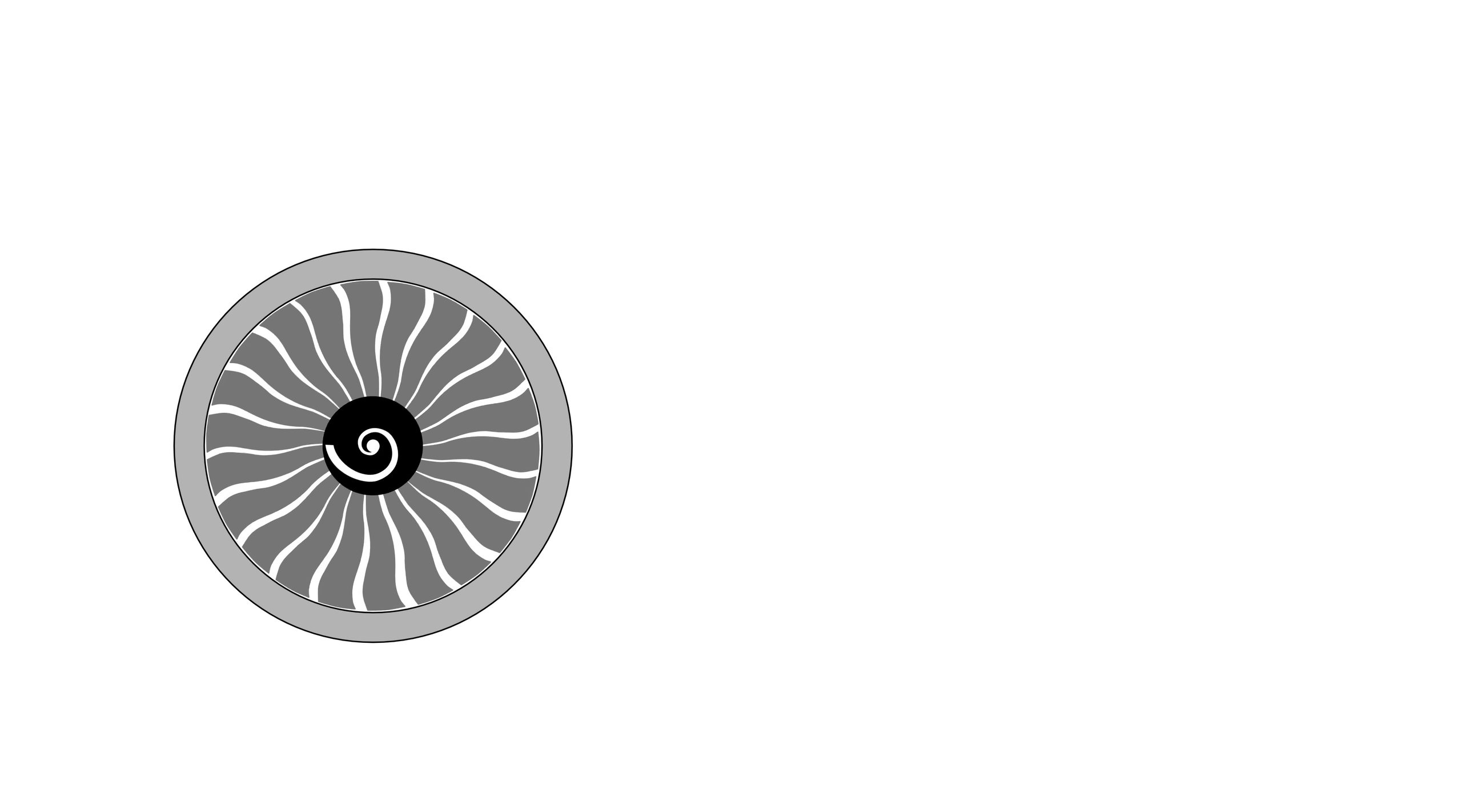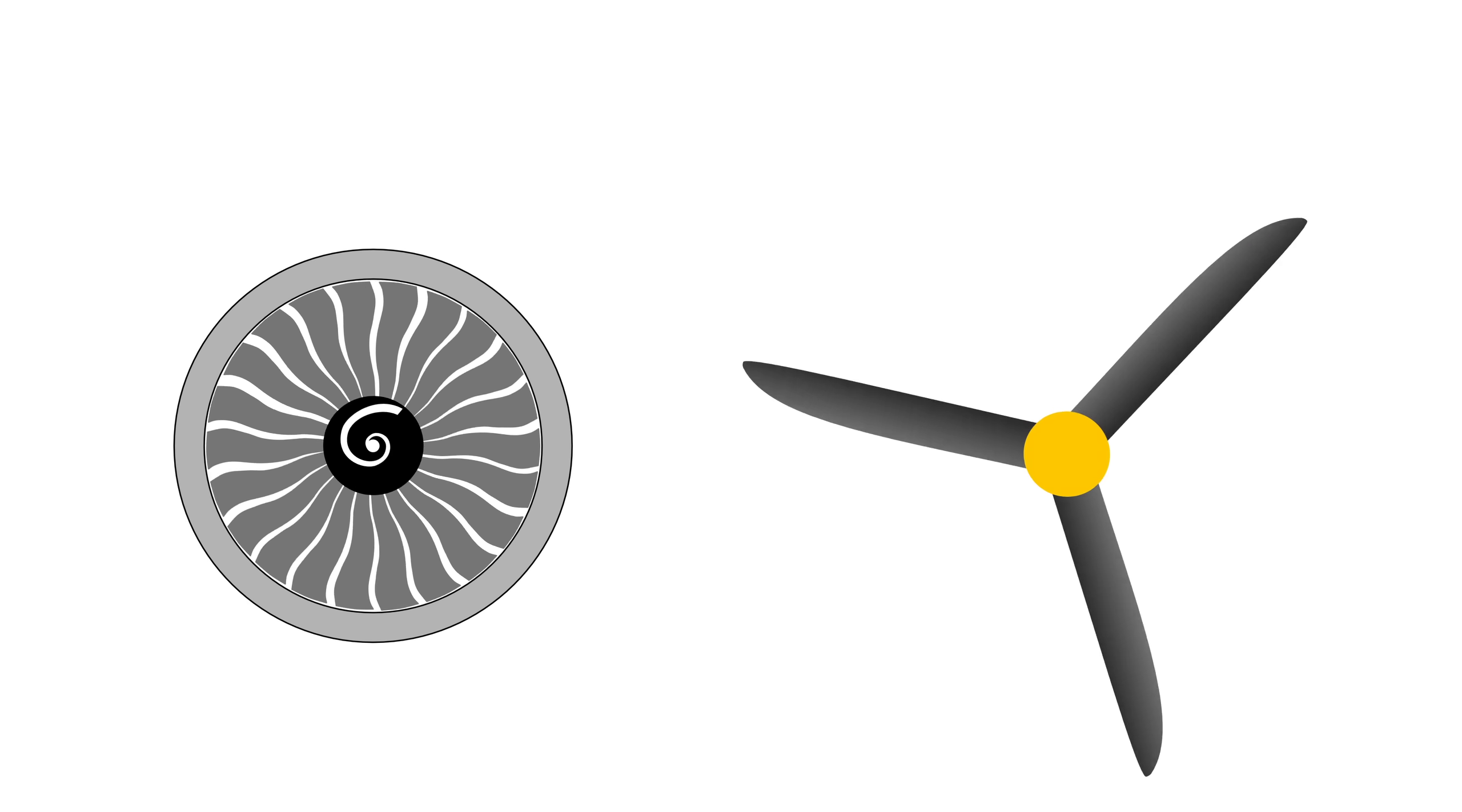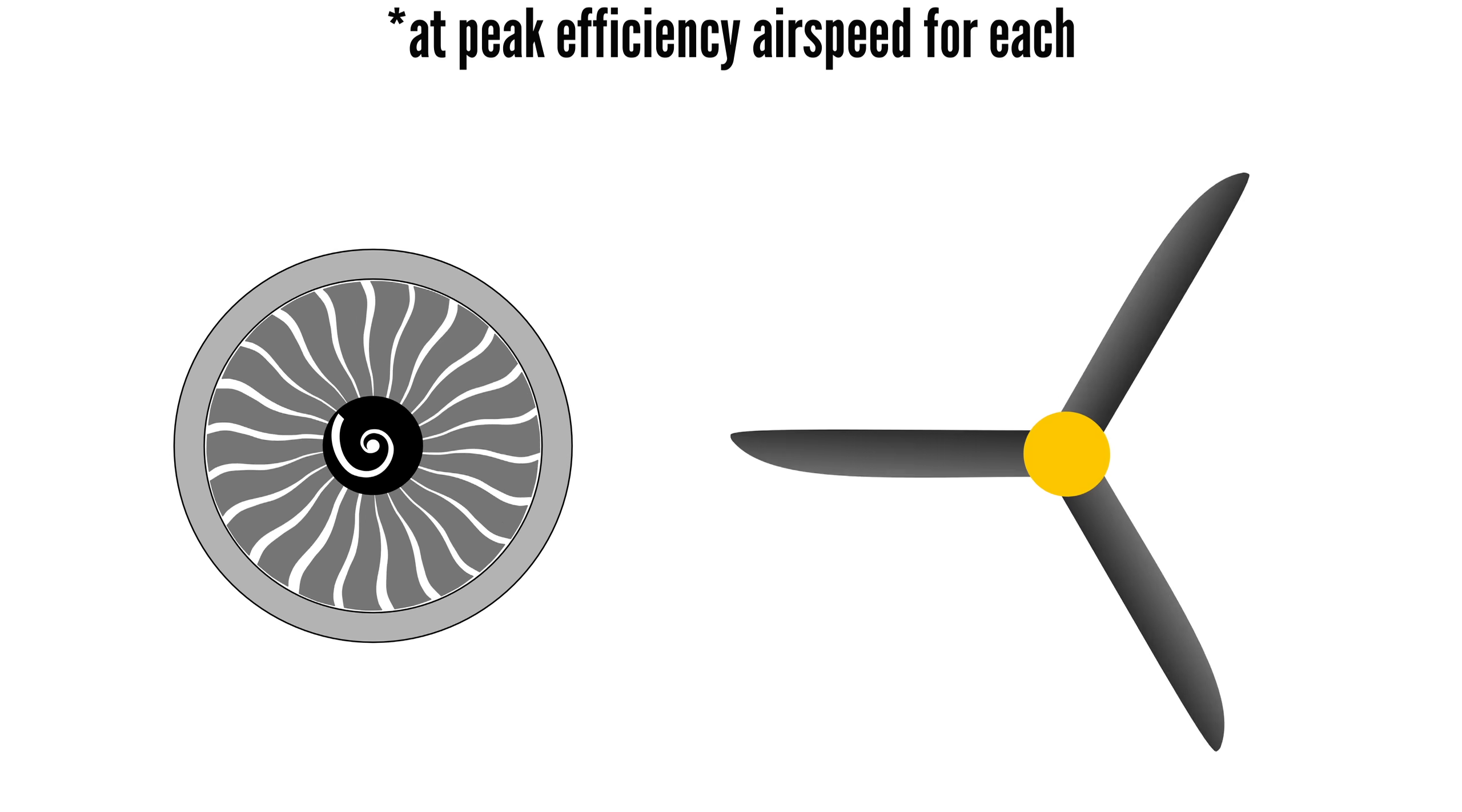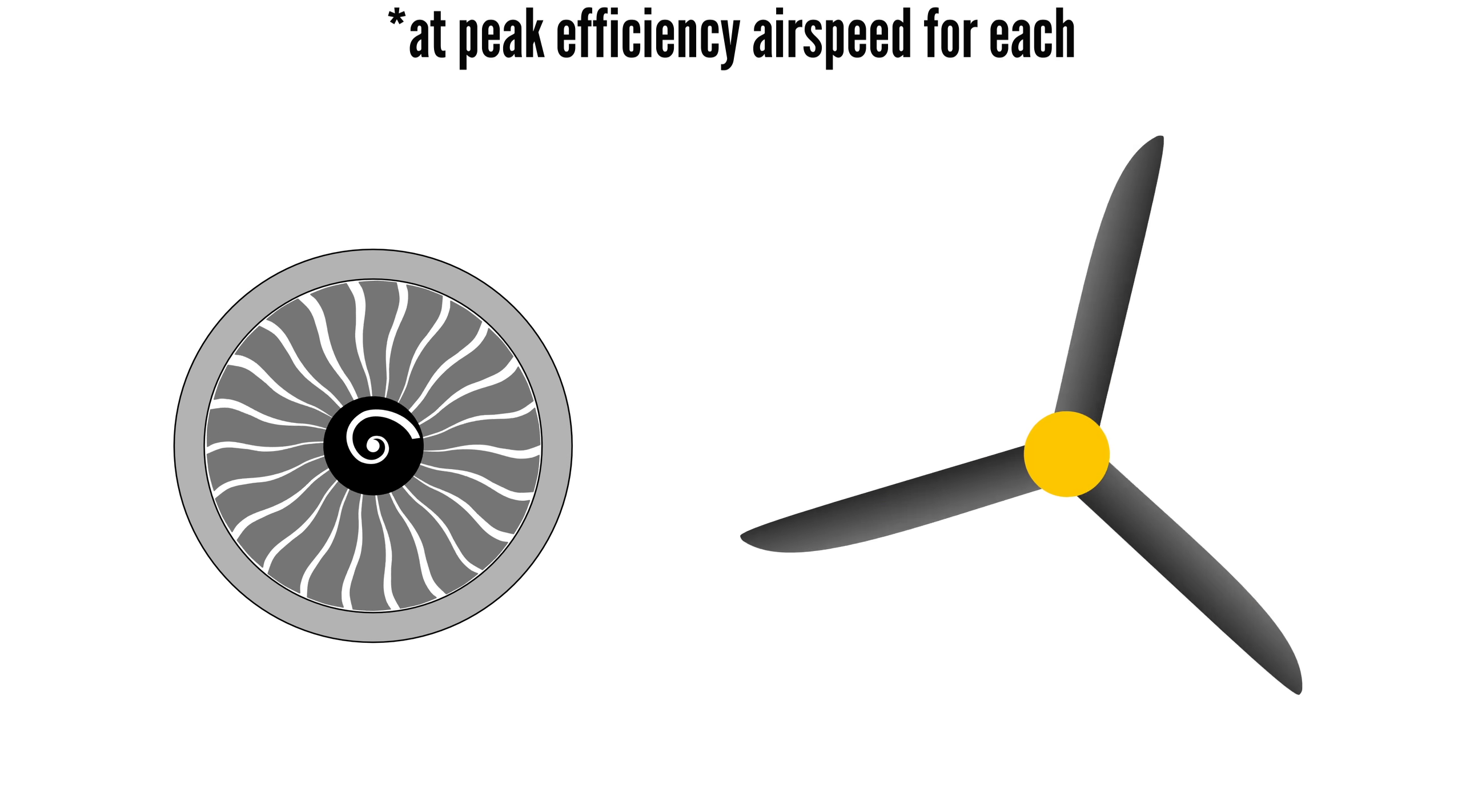A ducted fan of a smaller diameter operates as efficiently as an unducted propeller of a larger diameter and also operates quieter than an open propeller. So why not use them on small aircraft?